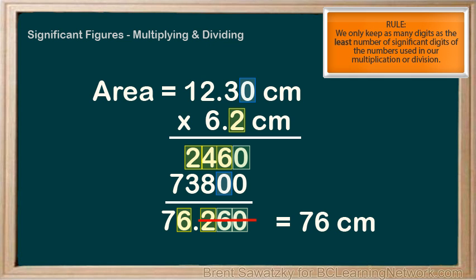Therefore, in our original problem, we could simply identify that the 6.2 is the one with the least number of significant digits, that is, two significant digits. Given this, we know that our answer must also have exactly two significant digits. Therefore, we round so that we only have two sig figs in our answer, and it's as easy as that.